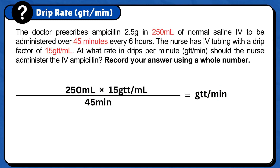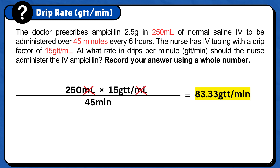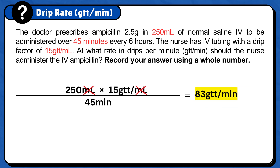250 milliliters times 15 gtt per milliliter divided by 45 minutes. Milliliter cancels out and the answer is 83.33 gtt per minute. The last step is to round to a whole number, and your final answer is 83 gtt per minute.